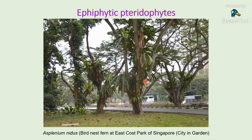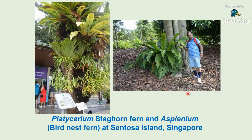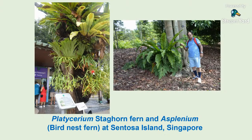This is a common scene in Singapore — an angiosperm tree with a bird nest fern growing on it. Botanically it is called Asplenium nidus. This photograph was taken in Singapore Botanic Garden. From Sentosa Island you can see two types of epiphytic ferns: Asplenium nidus (bird nest fern) and Platycerium (staghorn fern), which has two types of leaves — the lower leaves are forked repeatedly, giving the appearance of a staghorn.